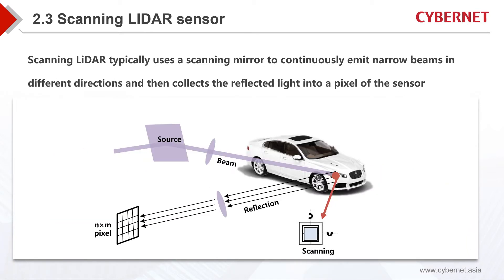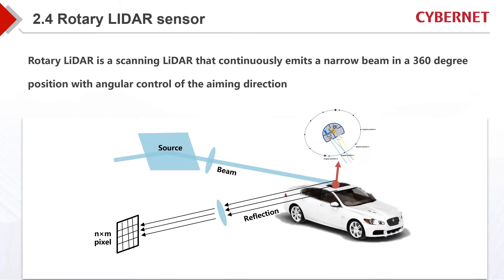Scanning radars use scanning mirrors to continuously emit narrow beams of light in different directions, and the reflected light is collected through a single pixel sensor. A TOF file can be obtained. A rotating LiDAR is a scanning LiDAR that continuously emits a narrow beam of light to control the aiming direction at a position angle of 360 degrees.